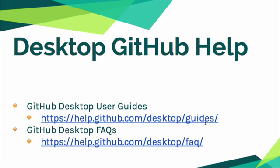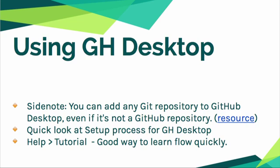If you need help with the desktop client, they have a lot of really good resources. Go to help.github.com and you'll see desktop guides or FAQs. I found the guides to be really helpful and comprehensive and easy to understand. As a quick side note, you can add any Git repository to GitHub Desktop — even if it's not a GitHub repository, you can add it and use it with the GitHub desktop client.